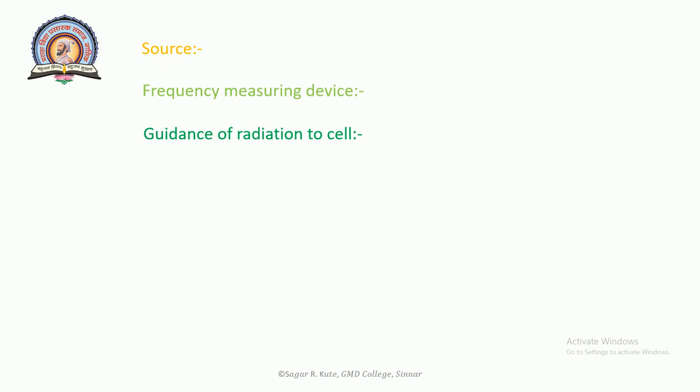Another useful device is the magic T, which is used as a power divider and for balancing microwave power in a bridge. In addition, one requires waveguide bends, connectors, tapers, and impedance matching devices.